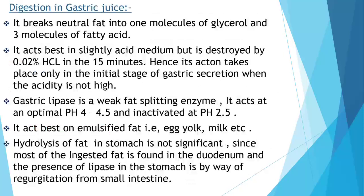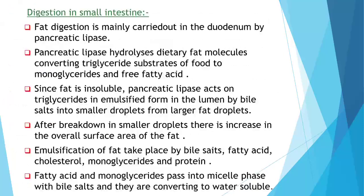Gastric lipase is a weak fat-splitting enzyme that acts at an optimal pH of 4 to 4.5 and is inactivated at pH 2.5, so it does not work properly in a highly acidic medium. It acts best on emulsified fat such as egg yolk. Hydrolysis of fat in the stomach is not significant, since most ingested fat is found in the duodenum; the presence of lipase in the stomach occurs by regurgitation from the small intestine.